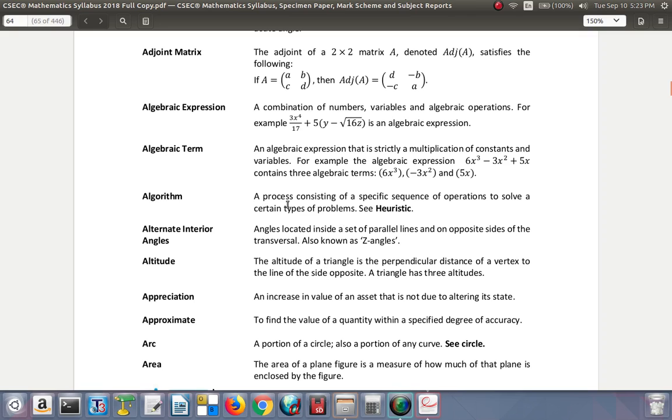Algorithm: a process consisting of a specific sequence of operations to solve a certain type of problem. Alternate interior angles: angles located inside a set of parallel lines and on opposite sides of the transversal, also known as Z-angles. Altitude: the perpendicular distance of a vertex to the line of the side opposite. A triangle has three altitudes.